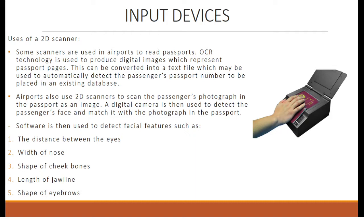Airports also use 2D scanners to scan the passenger's photograph in the passport as an image. A digital camera is then used to detect the passenger's face and match it with the one in the photograph. Software detects facial features such as the distance between the eyes, the width of the nose, the shape of cheekbones, the length of the jawline, and the shape of eyebrows.